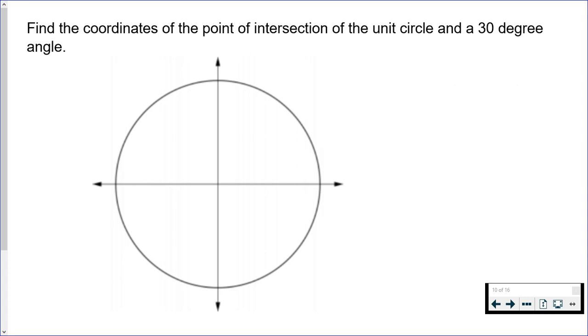This example says find the coordinates of the point of intersection of the unit circle and a 30-degree angle. This doesn't have to be perfect when you draw it, which I would recommend that you do on a piece of paper, but you do at least need to know which quadrant this is located in.